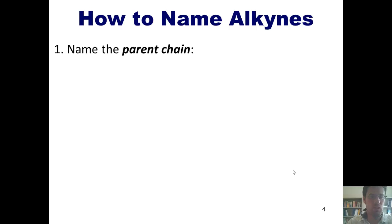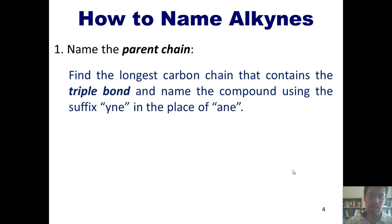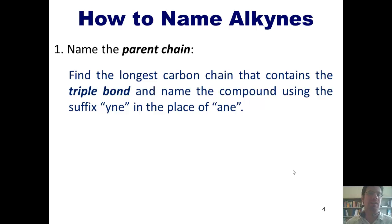Now I want to teach you how to name alkynes. Similar to the pattern we followed in naming alkenes back in Chapter 4, when you want to name an alkyne, you begin by naming the parent chain — the longest carbon chain that contains the triple bond, assuming you don't have any functional groups of higher priority. We find that chain and then name the compound using the suffix '-yne' in place of '-ane.' So an alkyne version of ethane would be called ethyne; an alkyne version of propane would be called propyne, and so forth.